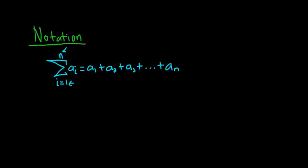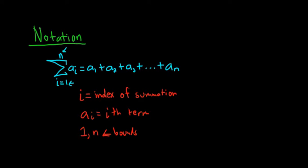So this is called summation notation. Several of these things have names. So i here is called the index of summation. Typically people like to use i, j, and k for the index. A sub i is called the i-th term. So a sub 1 would be the first term. A sub 2 would be the second term. A sub n would be the nth term. The numbers 1 and n, these are called the bounds. 1 is the lower bound, and n is the upper bound.